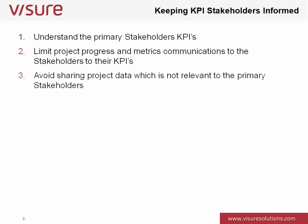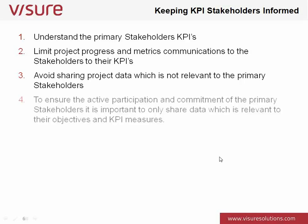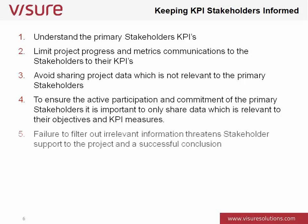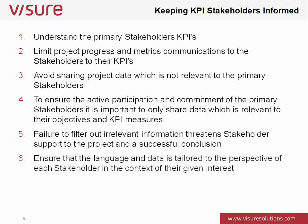We need to avoid sharing project data which is not relevant to these primary stakeholders — the worst thing you can do is present the whole wood for the trees argument. Make sure that you only communicate back to those stakeholders information relevant to the requirements they are interested in, and relevant to the key performance indicators that they are personally measured by. We need to ensure the active participation and commitment of the primary stakeholders, and it is important to only share data which is relevant to their objectives and KPI measures.